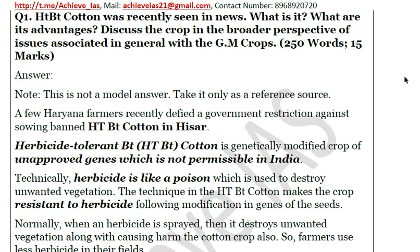HTBT stands for Herbicide Tolerant BT cotton. It is a genetically modified crop that is not yet approved in India, so it cannot be legally planted. To understand it, we must first understand herbicide — a substance used to destroy unwanted vegetation. In agricultural fields, many herbs called weeds grow and compete with the crop for resources.